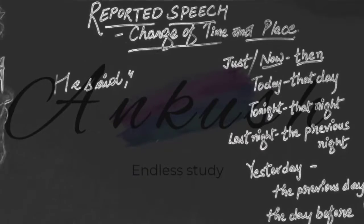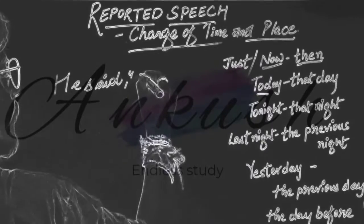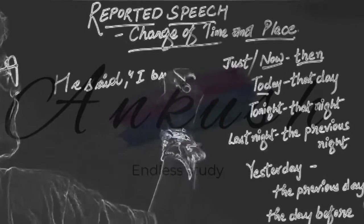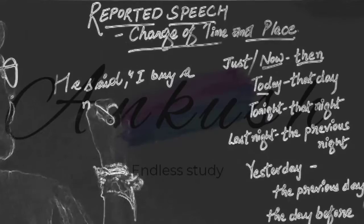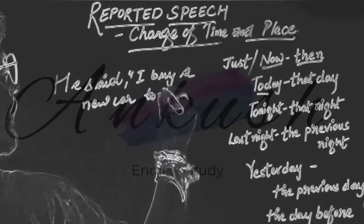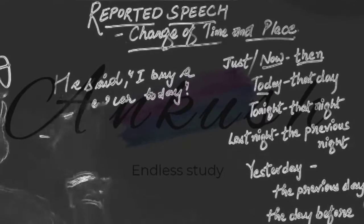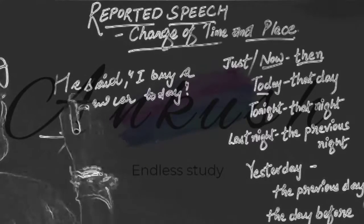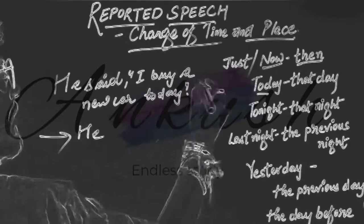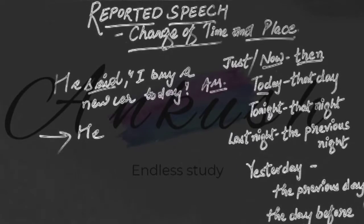Let us take one more example regarding 'today': he said, "I buy a new car today." So we have: he said, inverted comma, 'I buy a new car today', inverted comma close. This is an assertive sentence.